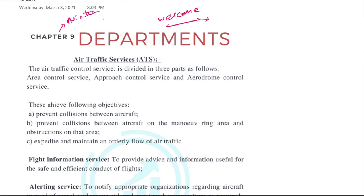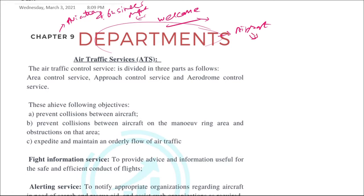This is chapter 9 of aviation topics from the book Aviation and Business Management. There are many departments in airports, and we'll be discussing the functions and roles of each department in this video. Starting with the air traffic services, they are known as ATS.